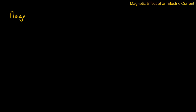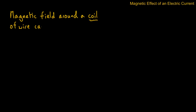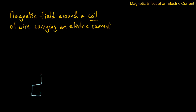Today we're going to take a look at a magnetic field around a coil of wire. This time we're going to look at the coil of wire carrying electric current. We have our wire and we're going to connect it to a battery, but this time we're going to put a coil in the wire like this.